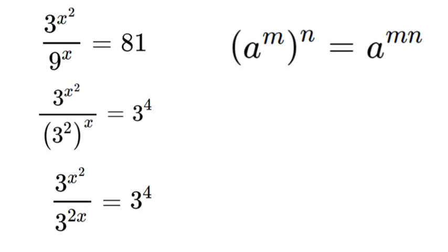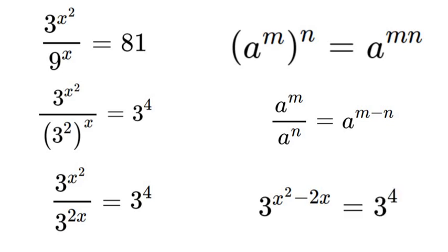Now, let's use another exponent property to simplify this even further. If we have a to the power of m over a to the power of n, it is equal to a to the power of m minus n. So, that means, since we have our a value is 3, we can say x squared minus 2x. So, we've got 3 to the power of x squared minus 2x is equal to 3 to the power of 4.